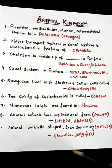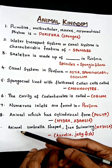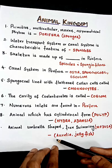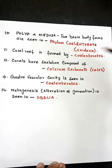An animal which has a cylindrical form is called a polyp — examples are Hydra and Adamsia. An animal which is umbrella-shaped and free-swimming is called medusa — examples are Aurelia and jellyfish.